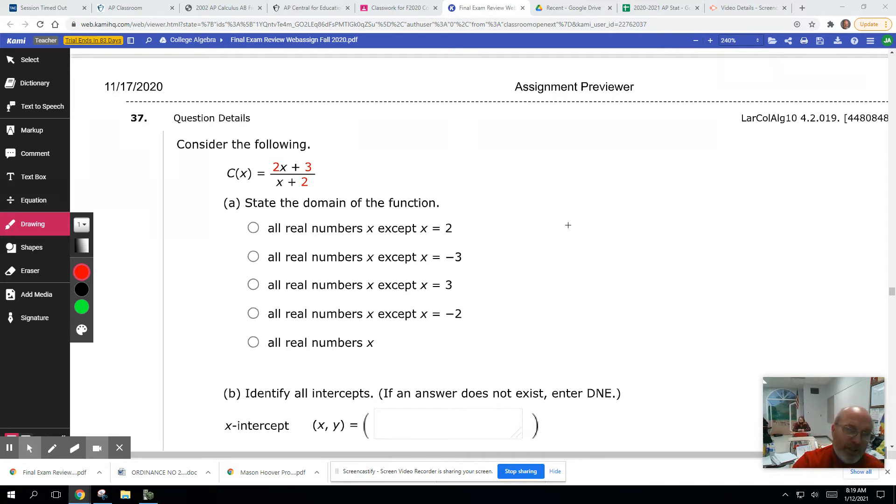Remember, like we said before, that the domain is everything except what makes the denominator zero. So we're going to set x plus 2 equals zero and solve that, get x equals negative 2. That's what cannot be in the domain of our function. So every real number except negative 2, that's the domain.